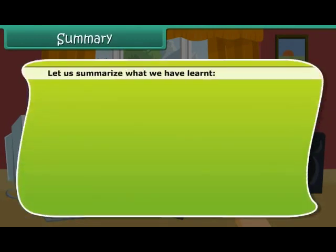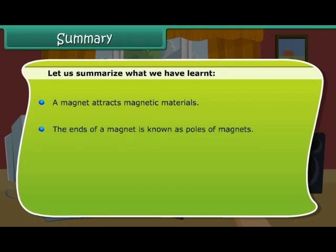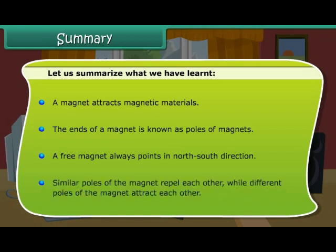Let us summarize what we have learned. A magnet attracts magnetic materials. The ends of a magnet are known as the poles. A free magnet always points in the north-south direction. Similar poles of a magnet repel each other, while different poles attract each other.